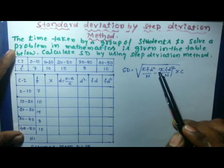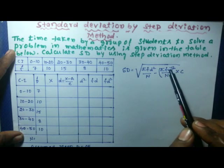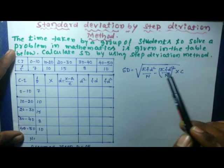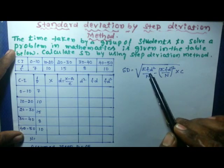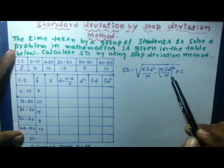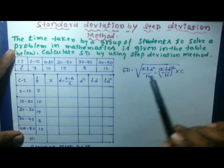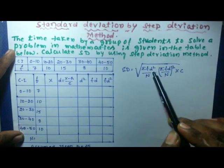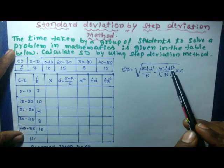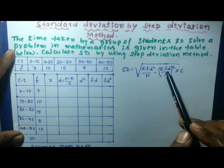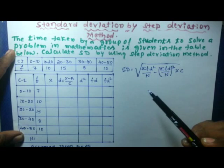The terms we need to find are Σfd (summation of fd), Σfd², and n. So the table must have columns for f, d, d², fd, and fd².